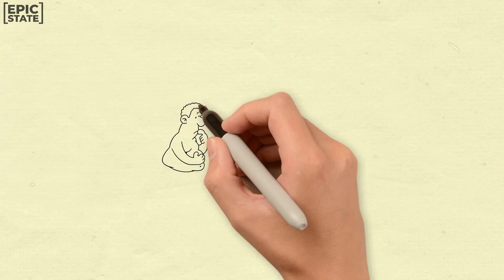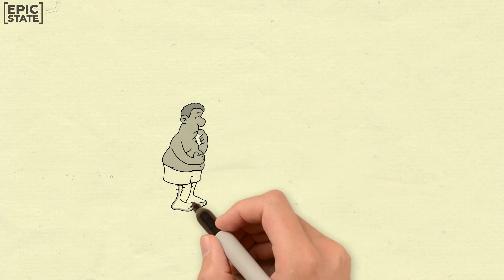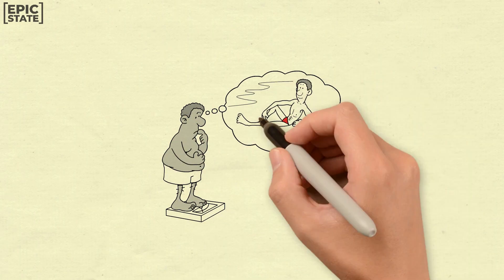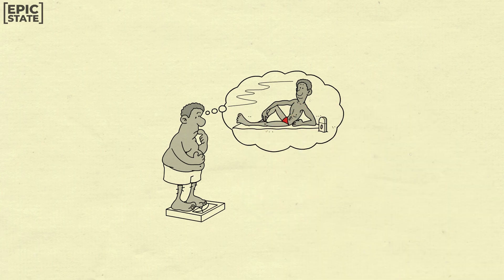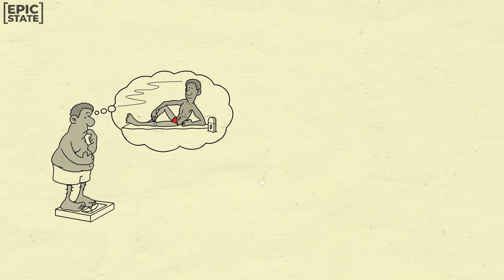For example, if your goal is to lose weight, instead of setting a goal to lose 50 pounds, set a goal to lose 1 to 2 pounds per week. This makes the goal more attainable and allows you to focus on achievable progress.